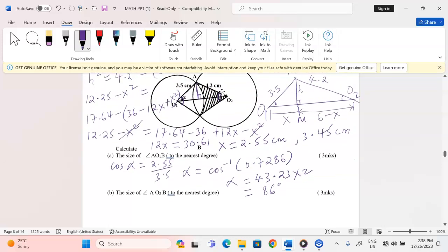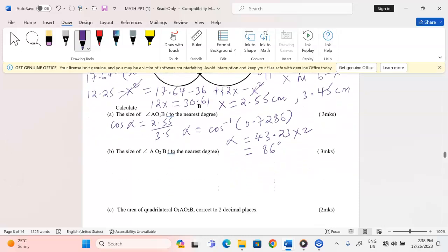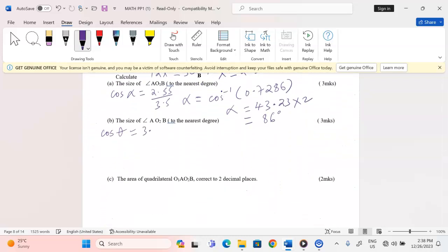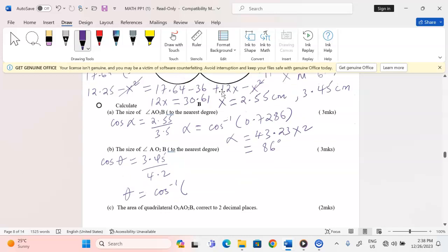The other angle at center O2 is going to be obtained by, again, the cosine of the angle. We can call this angle theta, which will be given by adjacent length, which is 3.45 divided by 4.2. So the value of theta is given by cos inverse of 3.45 divided by 4.2, which is 0.8214.